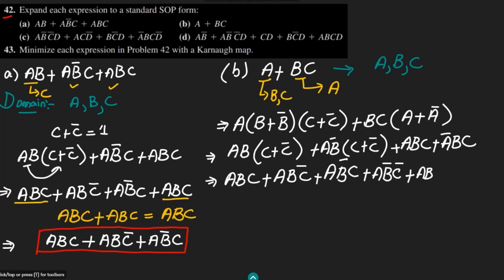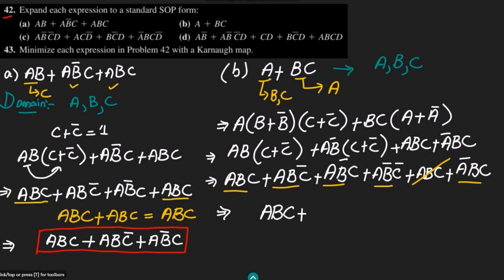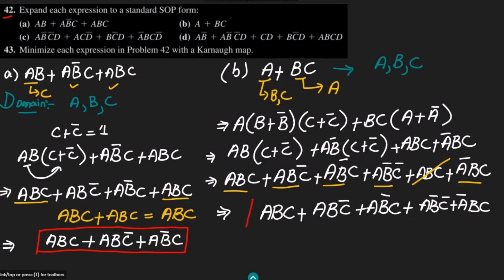Now checking for duplicate terms: abc appears more than once, so we keep only one copy. We also check ab'c complement — no duplicate. ab'c — no duplicate. a'bc — no duplicate. After removing duplicates, the final standard SOP form is: abc + abc' + ab'c + ab'c' + a'bc.